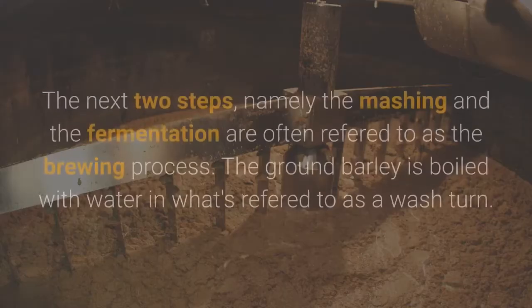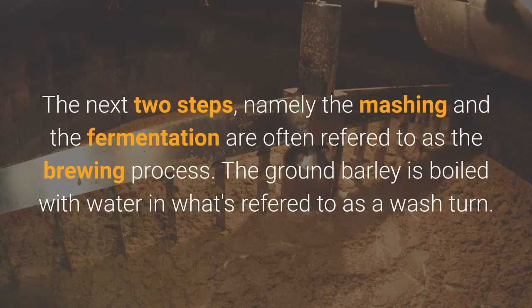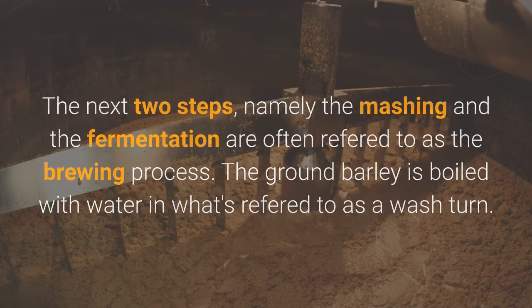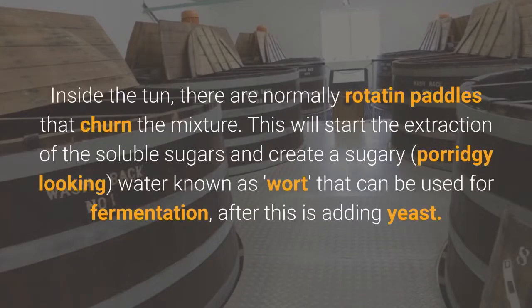The next two steps — mashing and fermentation — are often referred to as the brewing process. The ground barley is boiled with water in what's referred to as a wash tun. Inside the tun there are normally rotating paddles that churn the mixture. This starts the extraction of the soluble sugars and creates a sugary, porridge-like liquid known as wort, which can then be used for fermentation after yeast is added.